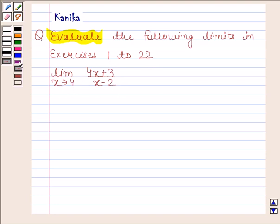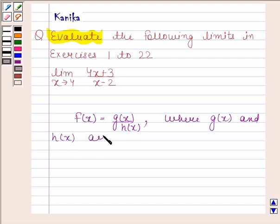So before solving this question, we should know that if f(x) is a rational function, that means f(x) is of the form g(x)/h(x), where g(x) and h(x) are polynomials such that h(x) is not equal to 0.